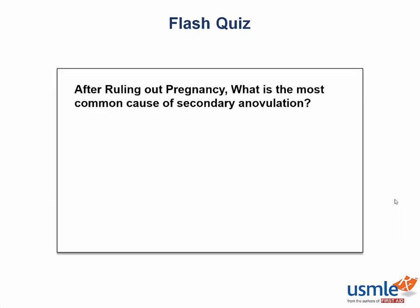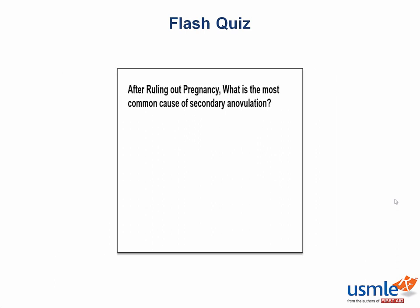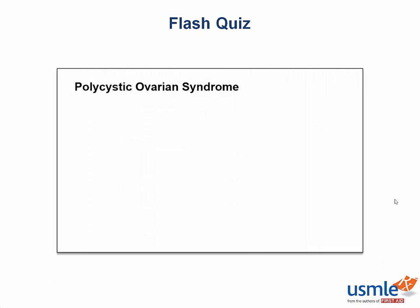After ruling out pregnancy, what is the most common cause of secondary anovulation? That is polycystic ovarian syndrome, and don't you forget it. What was the most common cause of primary anovulation again? Turner syndrome.